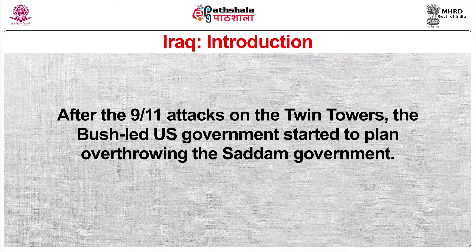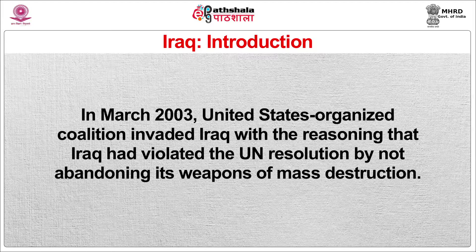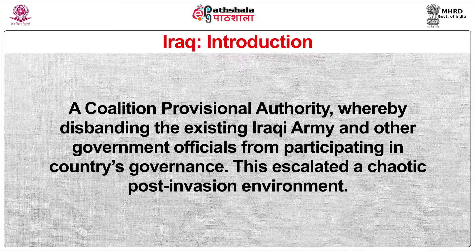After the 9/11 attacks, the Bush-led US government started to plan to overthrow the Saddam government. In March 2003, the United States organized a coalition which invaded Iraq, reasoning that Iraq had violated the United Nations resolution by not abandoning its weapons of mass destruction. The United States also claimed they wanted to restore democracy and peaceful conditions for Iraqi citizens. In the name of the restoration of democracy, the US established a coalition provisional authority, disbanded the existing Iraqi army, and stopped government officials from participating in governance, leading to a chaotic post-invasion environment.